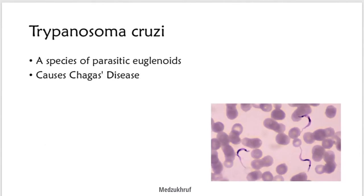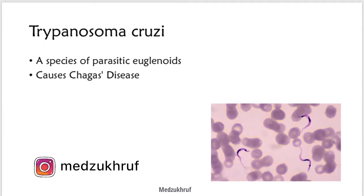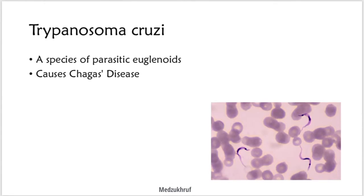Trypanosoma cruzi is a species of parasitic euglenoids, and this parasite is responsible for causing Chagas disease. I would like to call it Chagas disease. Here in the diagram, along with human cells, you can see the parasite.